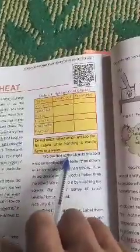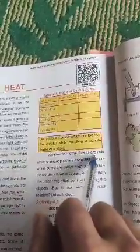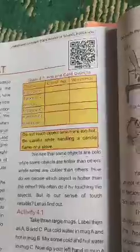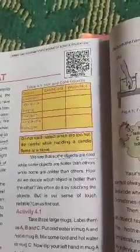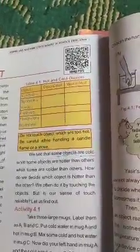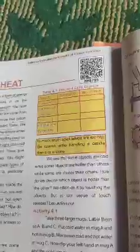We see that some objects are cold while some objects are hotter than others. When we compare objects, some are colder than others. How do we decide which object is hotter than the other? We often do it by touching the objects.